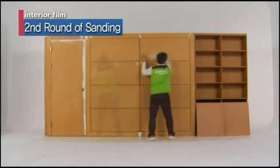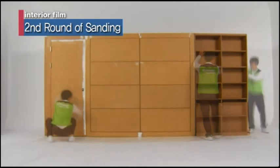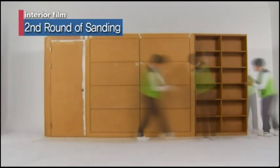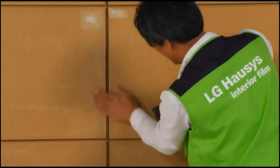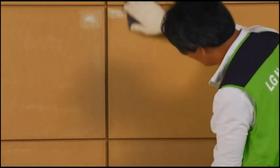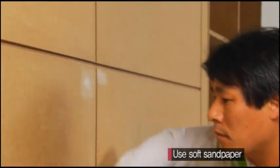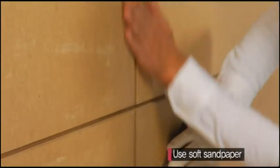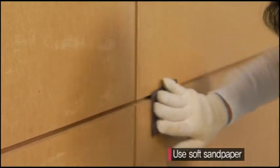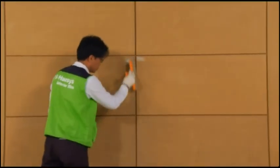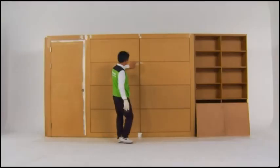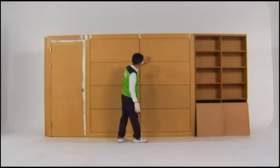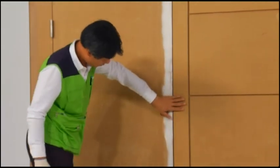The second round of sanding is performed to eliminate lumps that may have formed when applying the primer. First, check to see that the primer is dry. Smoothen the adhesive surface with sandpaper, remove debris with a brush. Move on to the next step after performing a thorough check with your hand for any debris.